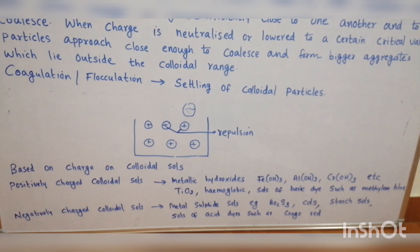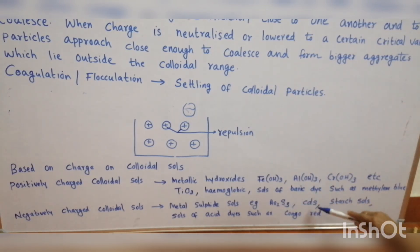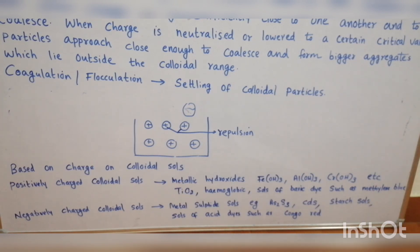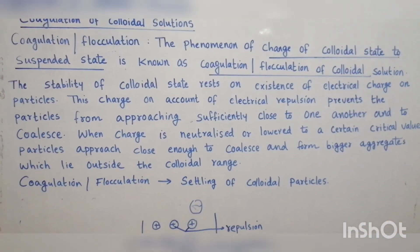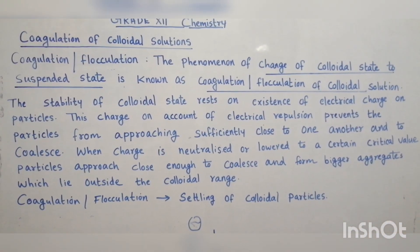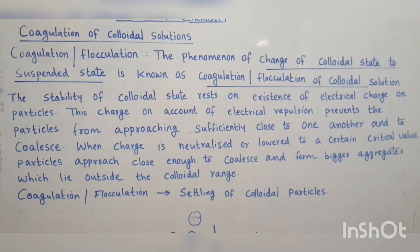Negatively charged colloidal sols include metal sulfide sols — for example, arsenic sulfide, cadmium sulfide — starch sols, and sols of acid dyes such as Congo red. Coagulation or flocculation is actually the settling of colloidal particles. The phenomenon of transition from the colloidal state to the suspended state is known as coagulation or flocculation.